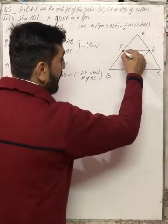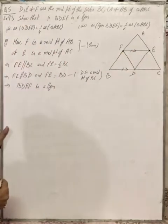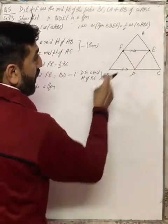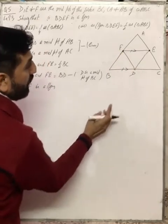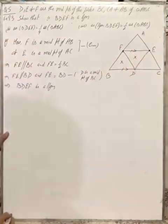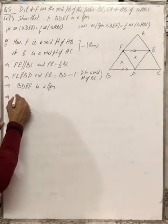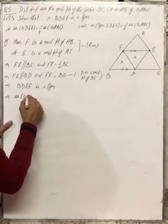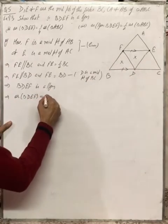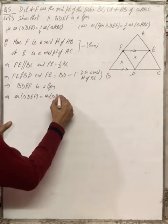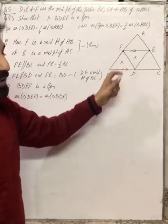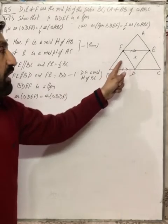Now in the second part we need to find the area of triangle DEF. Because BDEF is a parallelogram, and the property here is that the diagonal divides the parallelogram into two equal areas. So the diagonal of BDEF gives us two triangles of equal area. It means the area of triangle BDF is equal to the area of triangle DEF.